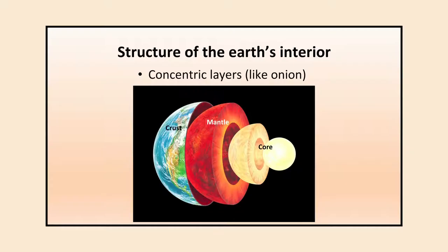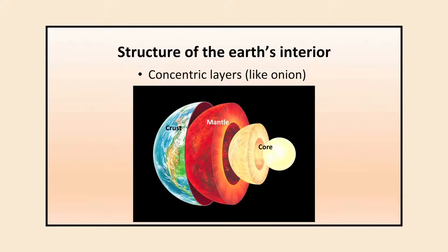The structure of Earth's interior has different layers in the form of concentric layers. Concentric means there is one center and then rings around it, with a single common center. For Earth also, there is one center and then different layers one after the other in a concentric ring form, just like an onion.